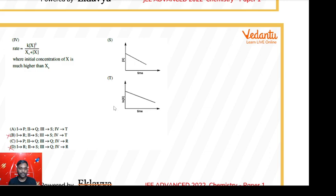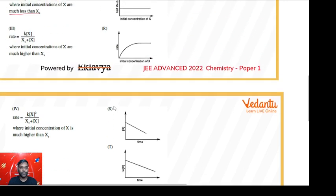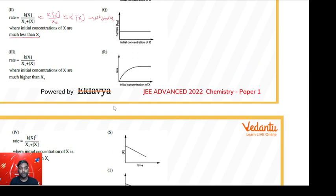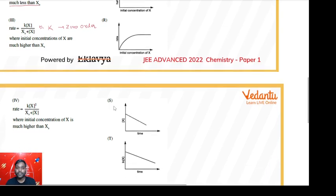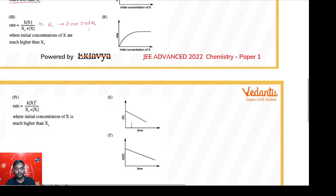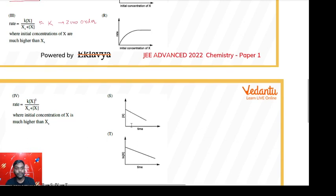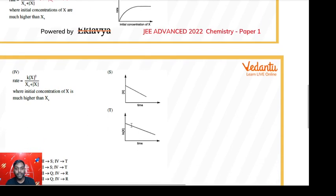In the third case, let us modify the rate law expression. If the initial concentration of X is much higher than the constant Xs, then the sum of Xs + X can be written as X, and X gets cancelled. This is nothing but k, which means it is modified to a zero-order reaction. In a zero-order reaction, the concentration varies linearly with time, it decreases linearly. So for third one, S would be correct.